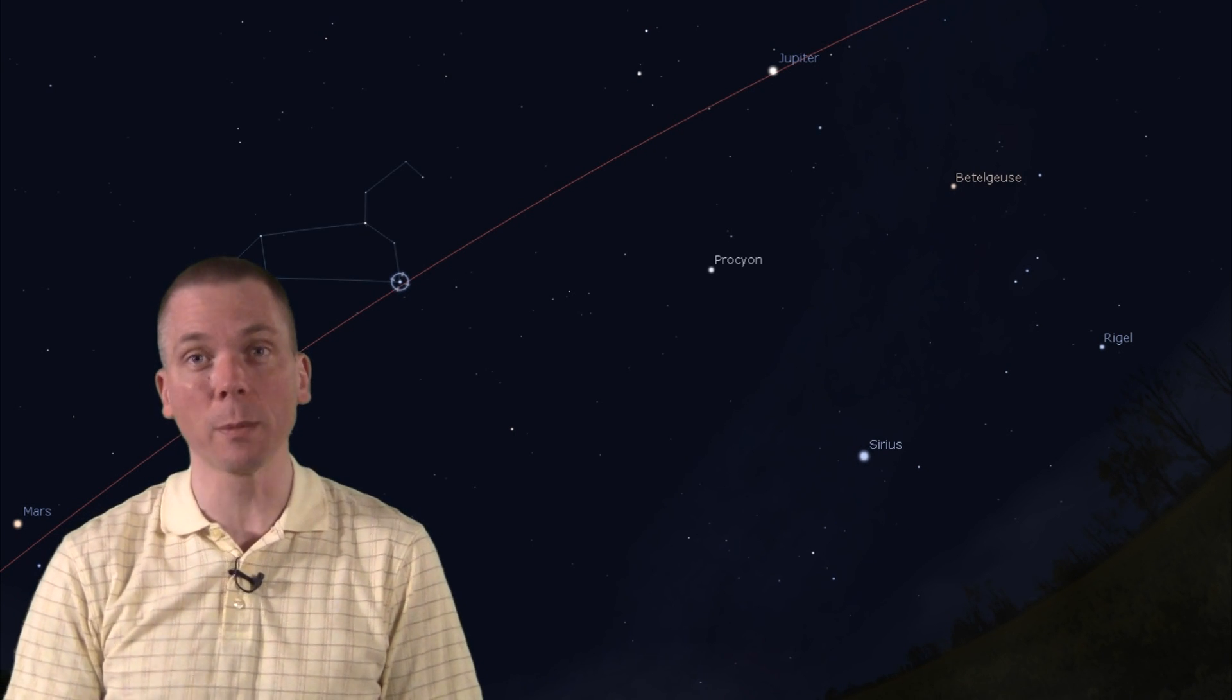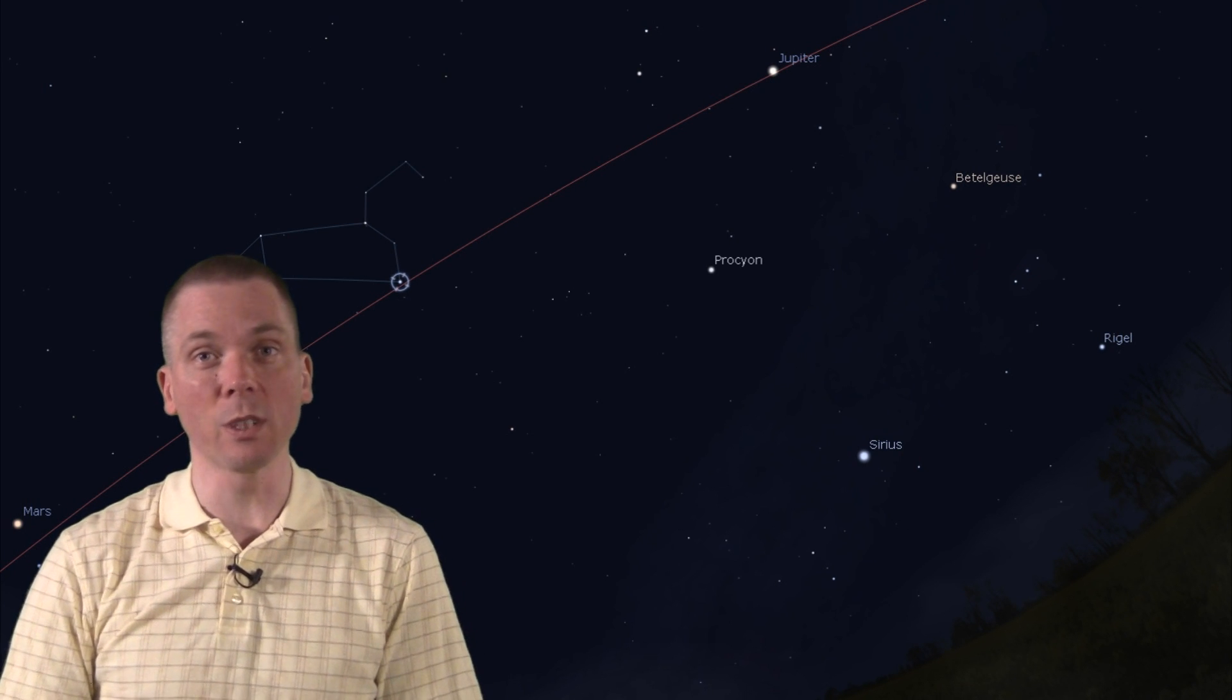In the world's highly light polluted locations, the top side of the sickle may be invisible and some of the third magnitude stars difficult to see. Use binoculars to locate them.